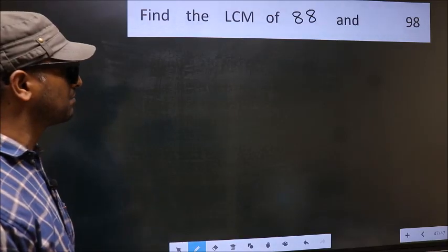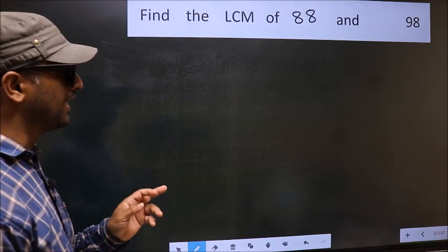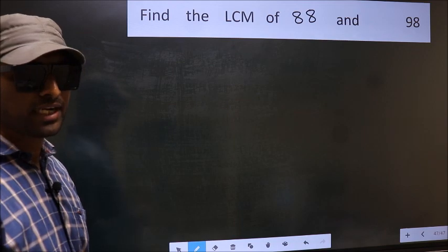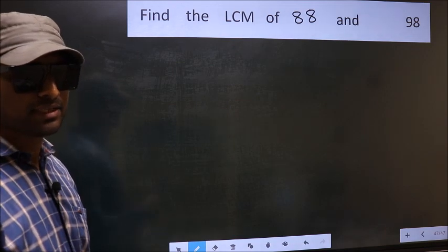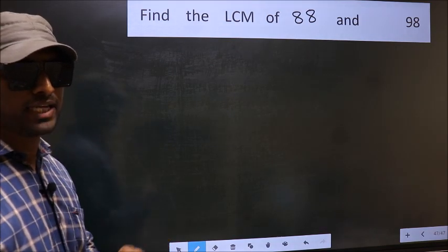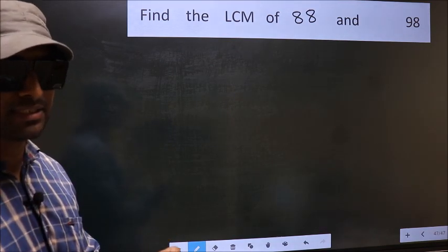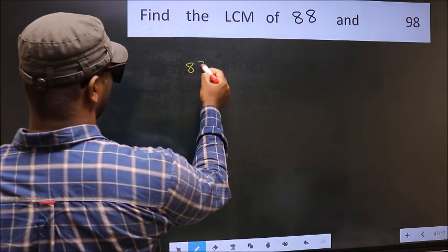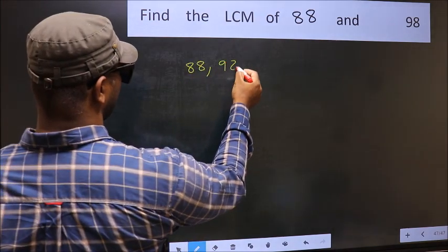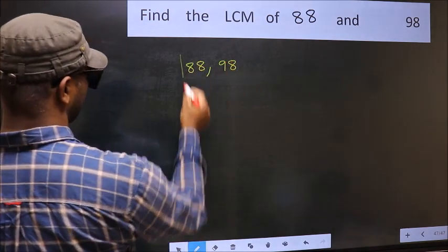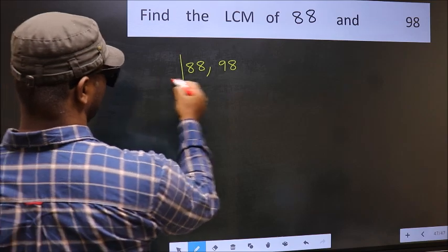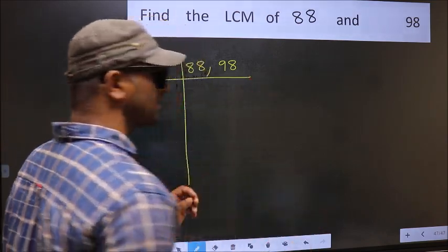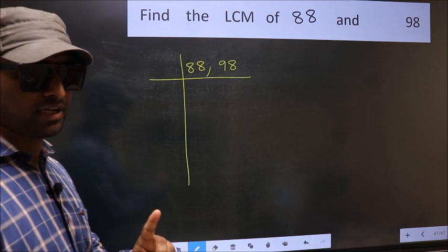Find the LCM of 88 and 98. To find the LCM, we should frame it in this way: write 88 and 98. This is step 1.